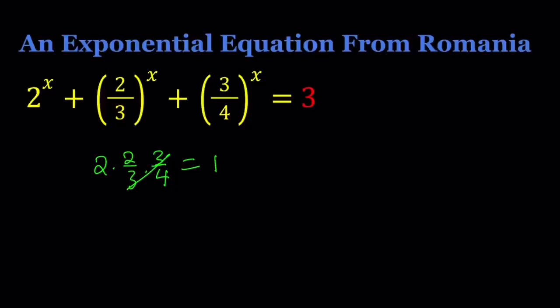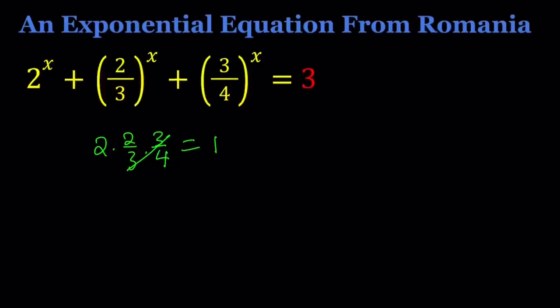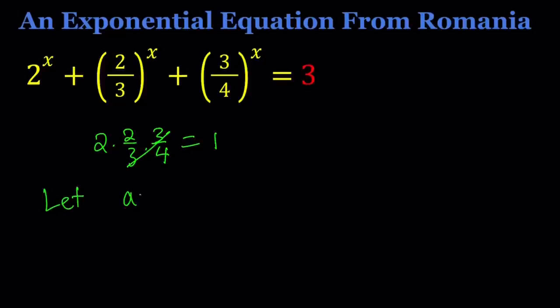We're going to do substitution here, which is a favorite method for me which is very powerful. Let a equal 2 to the power x, b equal 2 thirds to the power x, and c equal 3 fourths to the power x.